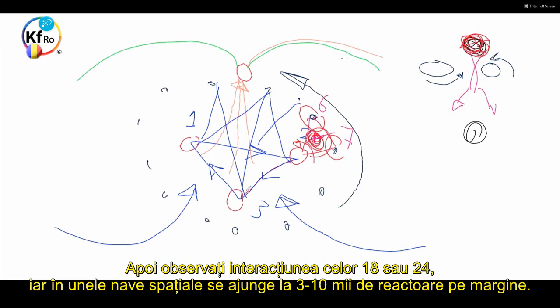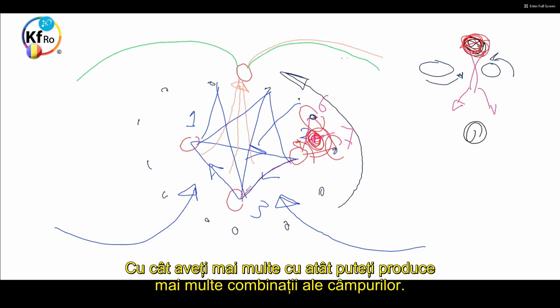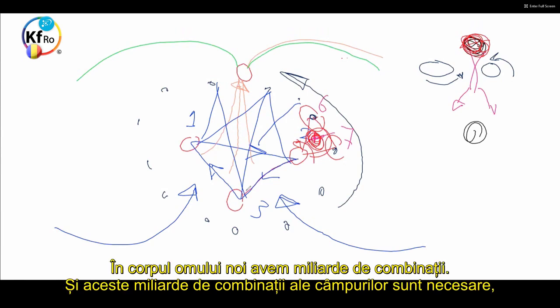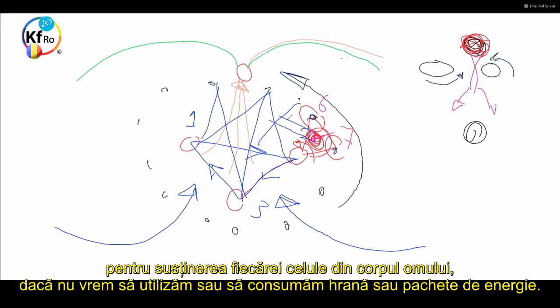Then you notice, the introduction of the 18 or 24, and in some Spaceships goes up to 3 to 10,000 cores in the boundary. The more higher numbers you have, the more possible combination of the fields you produce. In the body of the man, we have billions of combinations. And that billion of combination of the fields is needed for sustaining every cell in the body of the man, if we are not going to consume food or packages of energy.